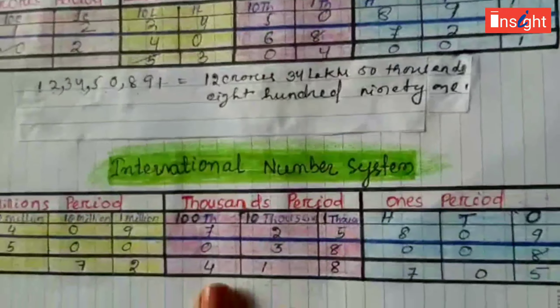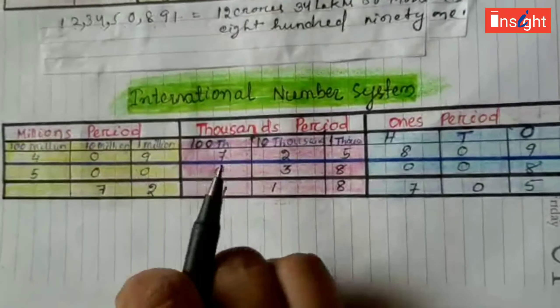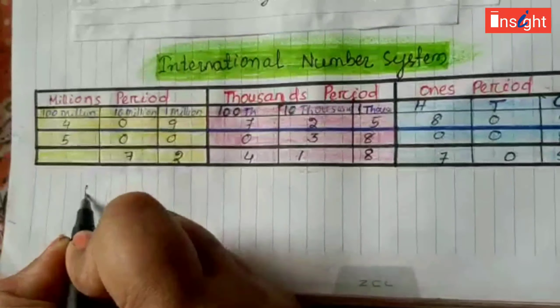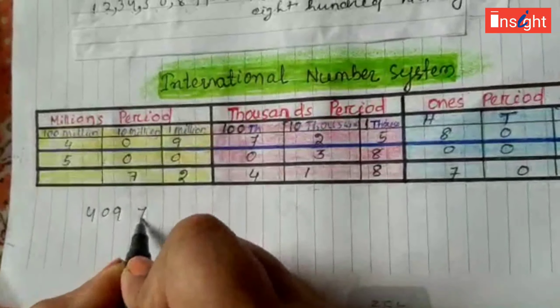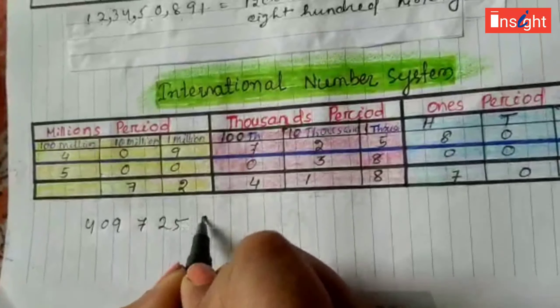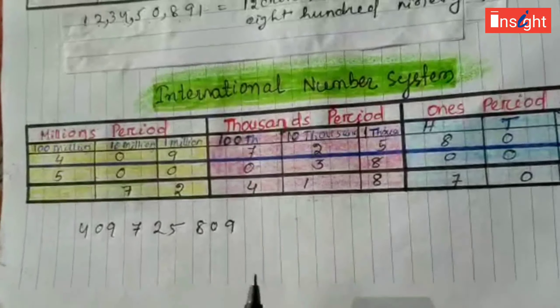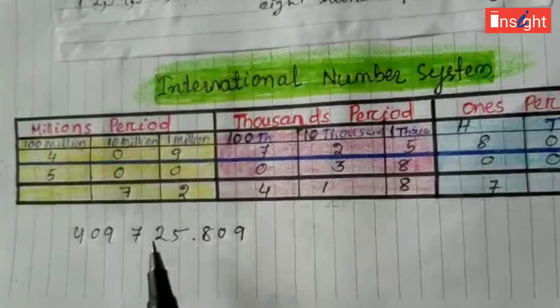Come to International number system. Again, I am writing the numbers. Here, leave three digits and put comma.